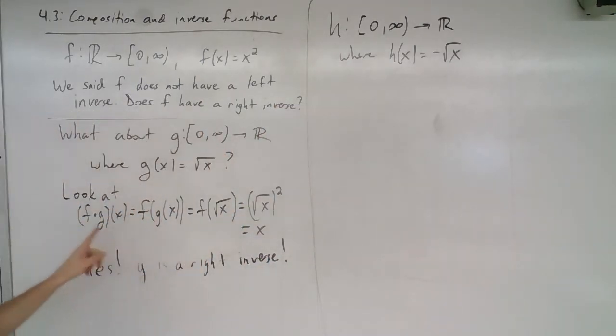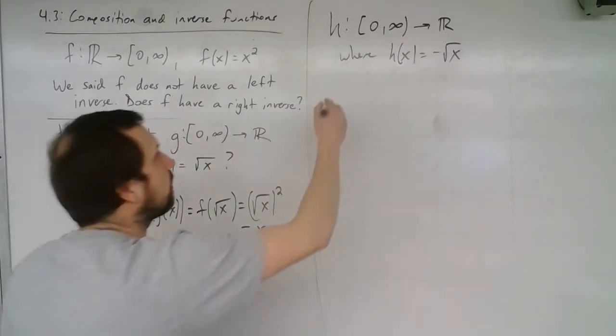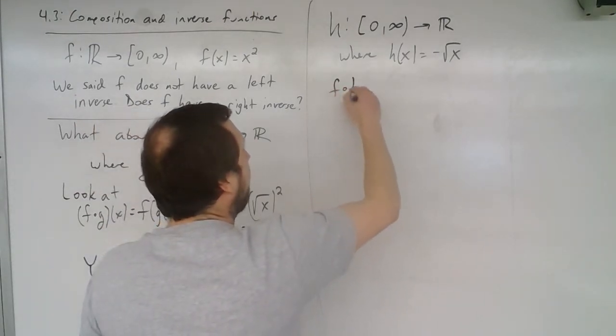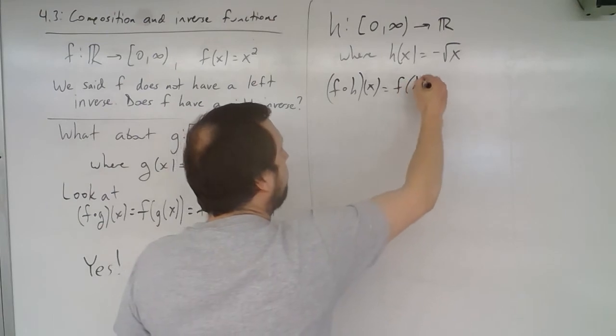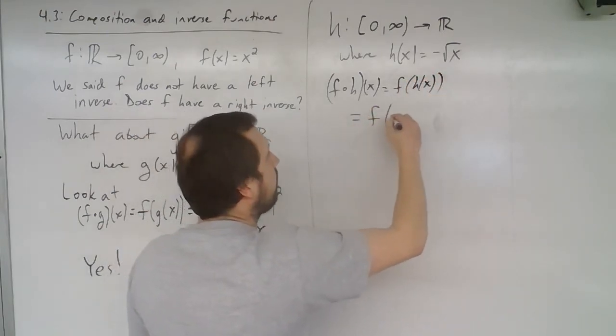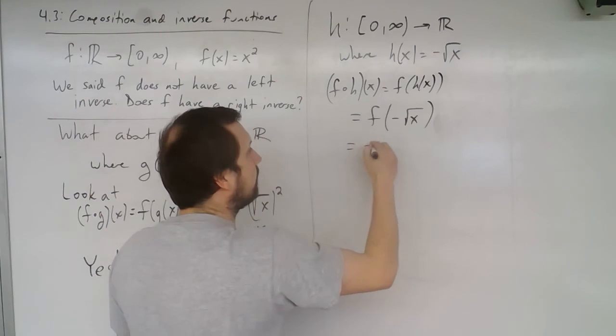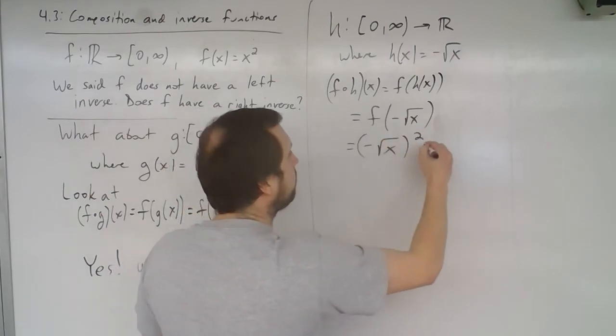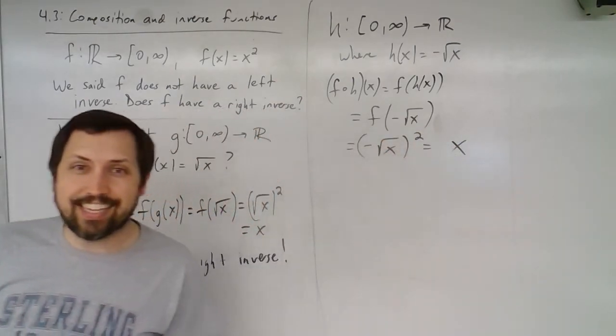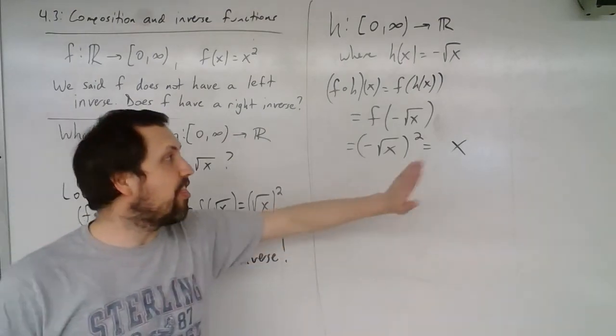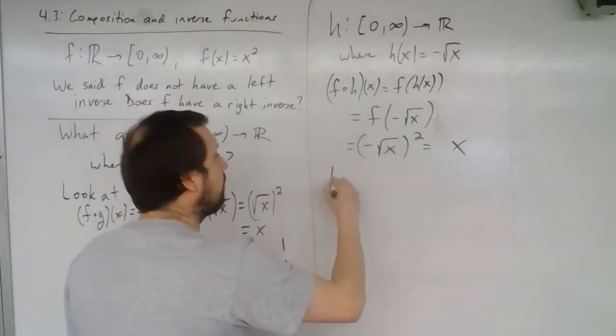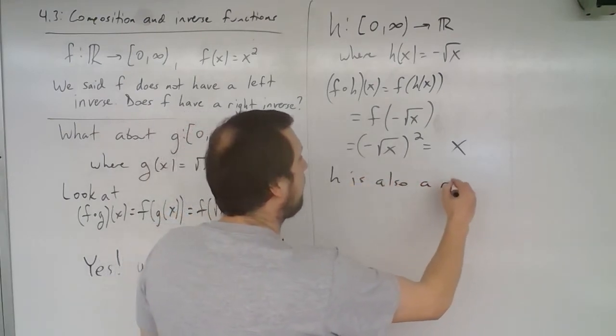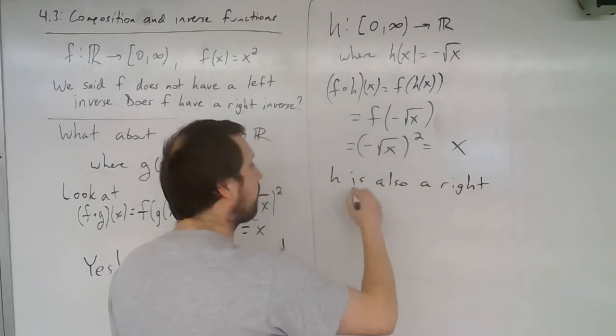And we check the same property that we did over here, where we're going to look, again, what if h is on the right-hand side? So this is f of h of x. And so this is going to be f of negative square root of x. So this is negative square root of x quantity squared, which gives me x again. And so this is also a right inverse. So h is also a right inverse.